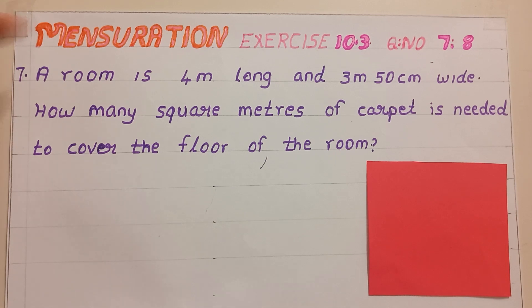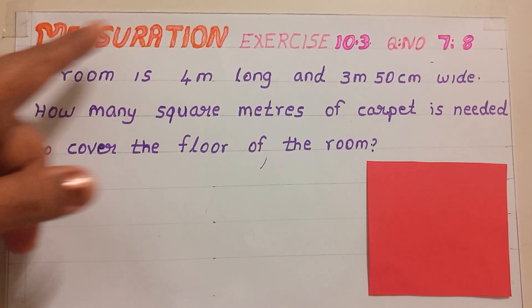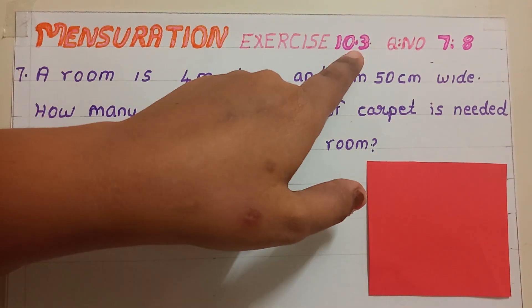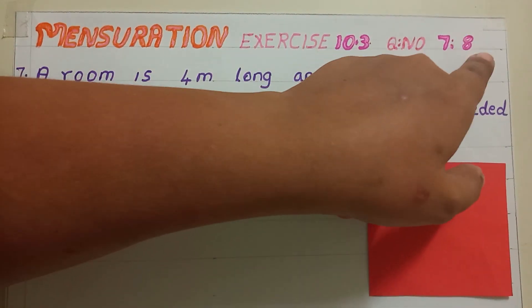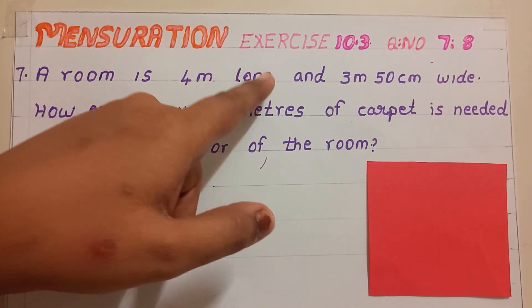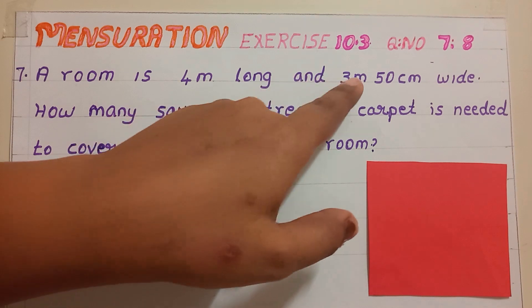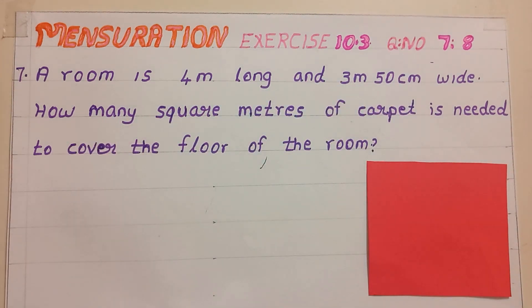Hello my dears, today we can deal with Mensuration exercise 10.3, question number 7 and 8. The 7th question says that a room is 4 meter long and 3 meter 50 centimeter wide. How many square meters of carpet is needed to cover the floor of the room?